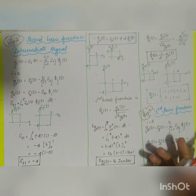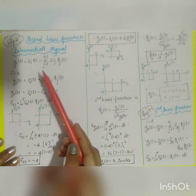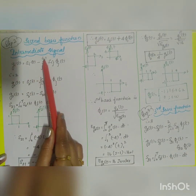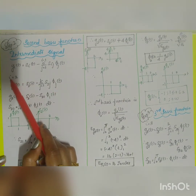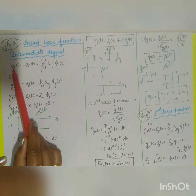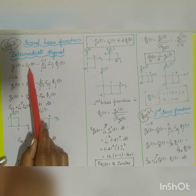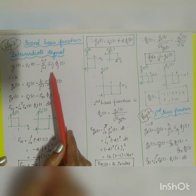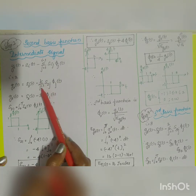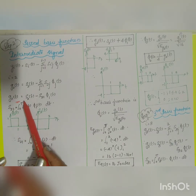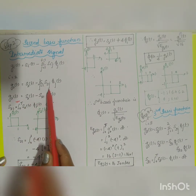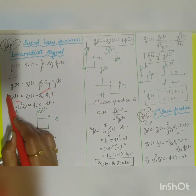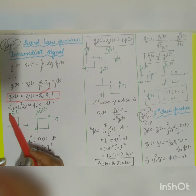To find φ2(t), we use the intermediate signal formula: g_i(t) = s_i(t) − Σ_{j=1}^{i−1} s_{ij}·φ_j(t). For i=2: g2(t) = s2(t) − s21·φ1(t). We need to find coefficient s21, using s_{ij} = ∫₀ᵀ s_i(t)·φ_j(t) dt.